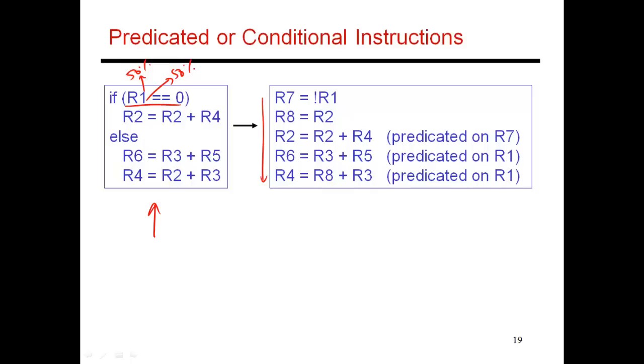So instead, I'm choosing to execute both the then part and the else part. This new code doesn't even have a branch. It executes the then part, and then it goes ahead and executes the else part. What I've done is I've added this clause which says go ahead and do R2 plus R4, but before you write the result into R2, check the value of R7. Only if R7 is non-zero should you perform the write. Otherwise, just throw this result away.